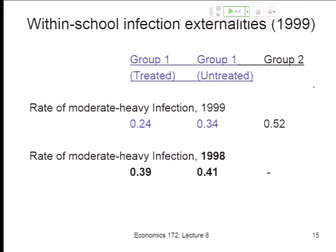The answer: they're almost identical. There are other characteristics we have for people who got treated versus those who didn't, and remarkably, other than the issue that a bunch of older girls were the ones untreated, the household characteristics are very similar — latrine ownership, livestock ownership — and their infection rates are almost the same. It's clearly not randomized who got treated, but they're not radically different groups.